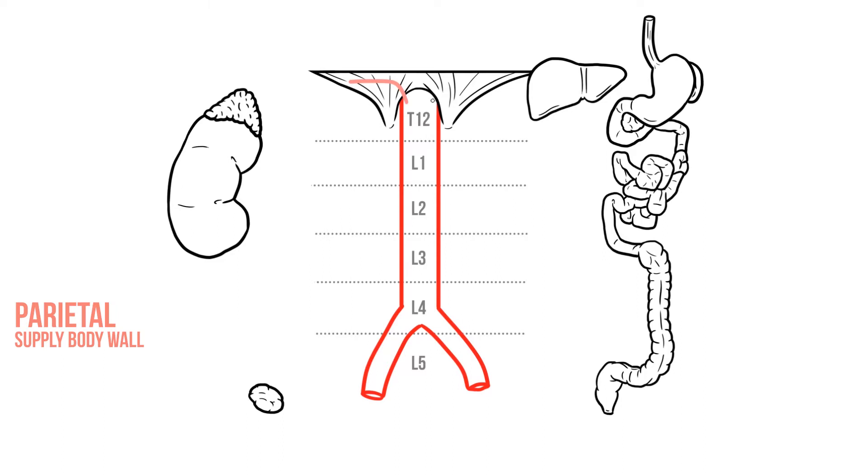So heading up to the underside of the diaphragm are the inferior phrenic arteries. We also have subcostal arteries that leave at T12 and run just below the ribs. Finally the lumbar arteries leave the aorta at every level between L1 and L4.